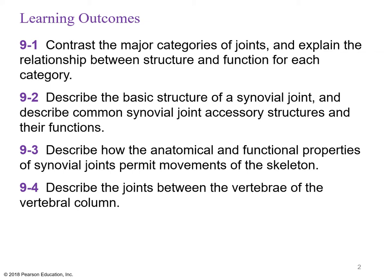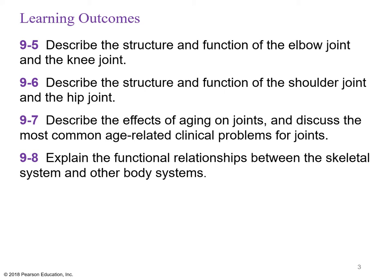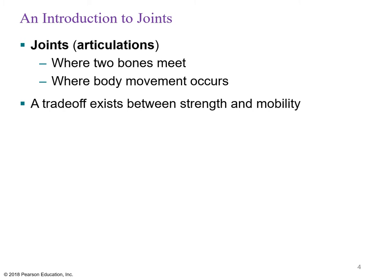We will contrast the different major categories of joints and look at the relationship between structure and function. We will describe the basic structure of a synovial joint — the key, freely movable joint — and how its anatomical and functional properties permit skeletal movement. We will also describe joints between the vertebrae, look at the elbow, knee, shoulder, and hip, discuss aging effects on joints, and explain functional relationships between the skeletal system and other body systems.